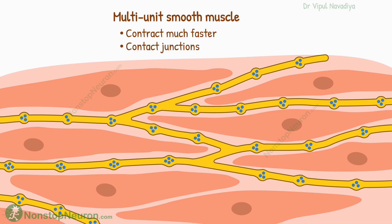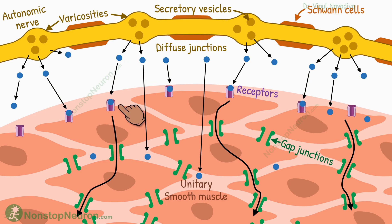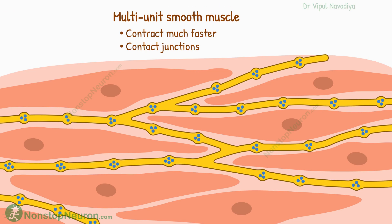So this was all about neuromuscular junctions in smooth muscle. To summarize: smooth muscles are innervated by autonomic nerves. These neurons have varicosities along the axon that release neurotransmitters into the matrix around the smooth muscle fibers. The transmitter diffuses through the matrix and stimulates the outer layer of muscle fibers. In unitary smooth muscles, deeper fibers are stimulated by conduction of action potentials through gap junctions. In multi-unit smooth muscles, each muscle fiber is stimulated independently by closely located varicosities.